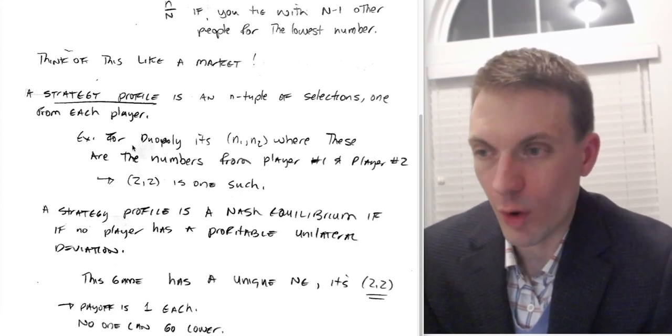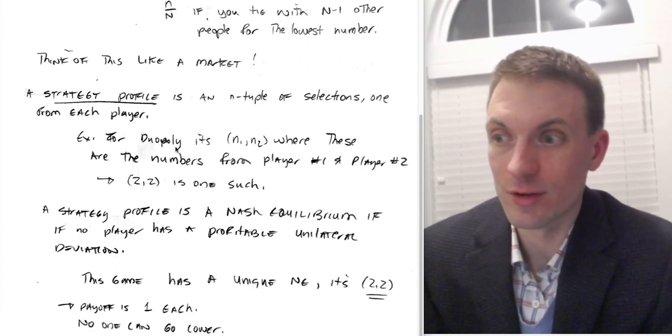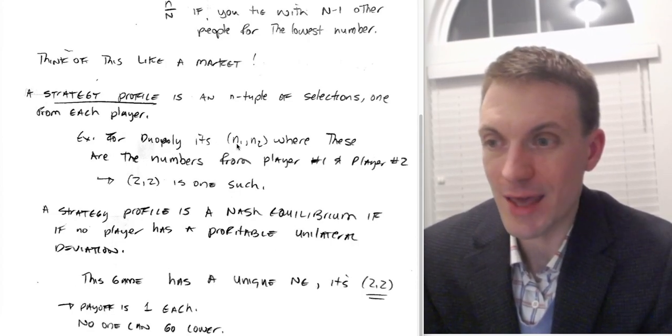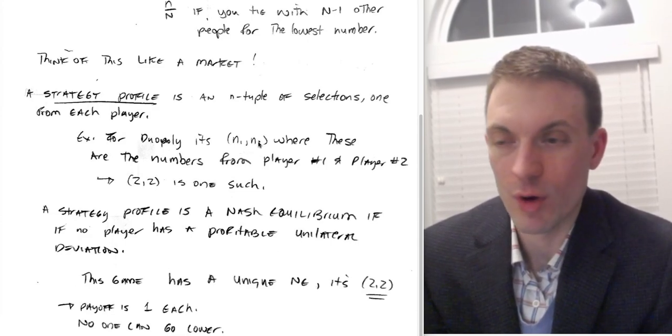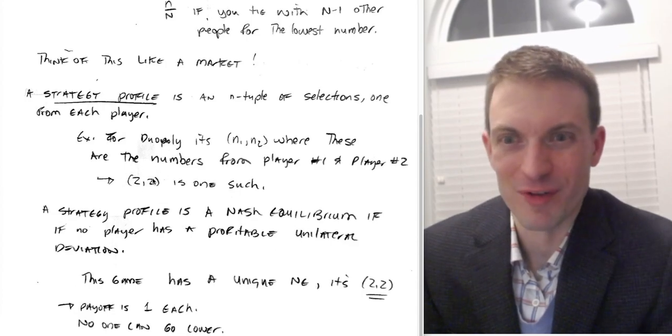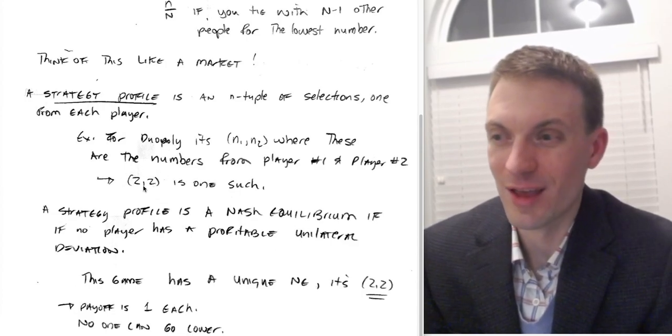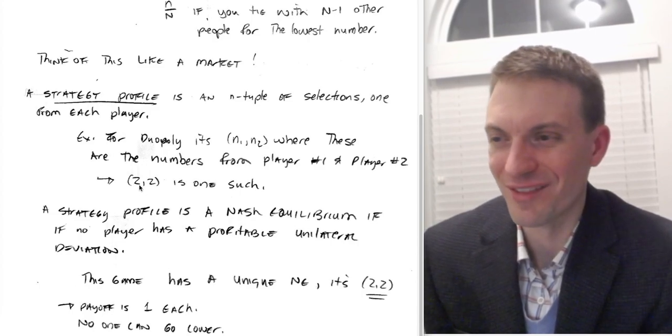So then one strategy or a general form of a strategy profile in this game for a duopoly would be n1, n2, where n1 is the number selected by person 1, n2 is the number selected by person 2. So these are the numbers from player 1 and player 2, respectively. And one such strategy profile would be 2-2. Another one would be 2-3, or 2-4, or 4-4, or 5-5. There's a lot of them.